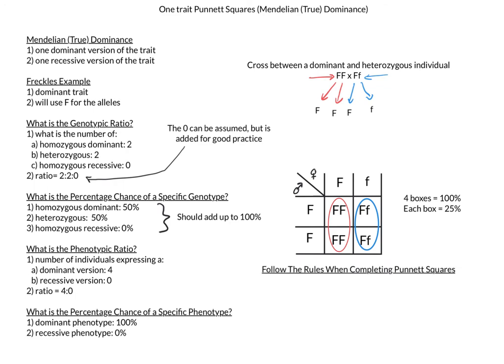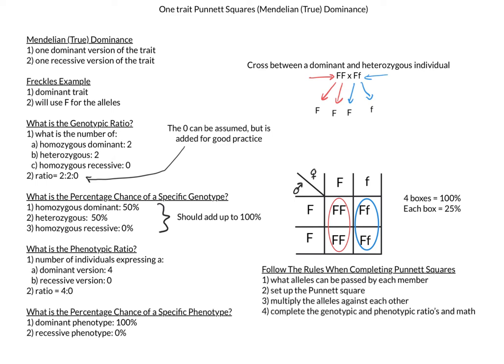Make sure that as you go through and complete Punnett squares that you follow the basic steps. Figure out what alleles can be passed by each member, set up the Punnett square, multiply each set of alleles against each other, then complete the genotypic and phenotypic ratios and math. This concludes our video covering how to complete one-trait Punnett squares, specifically the ones with Mendelian or true dominance.